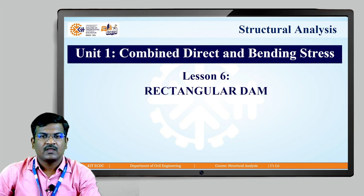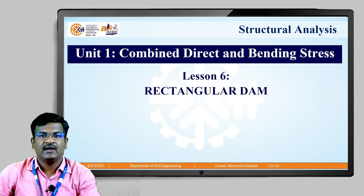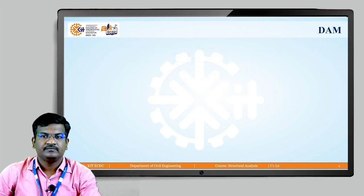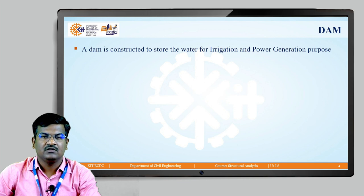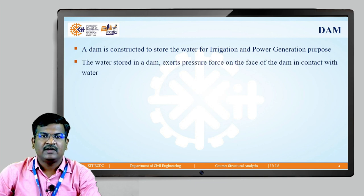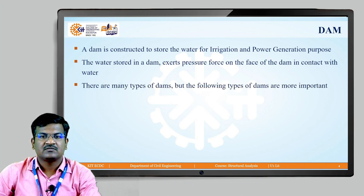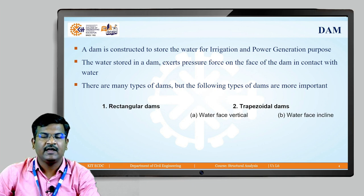Now we will discuss the dam, specifically the rectangular dam — how to find out the combined direct and bending stress on a rectangular dam. The dam is constructed to store water for irrigation and power generation purposes. The stored water exerts pressure force on the face of the dam in contact with the water. There are many types of dams, but two are most important: the rectangular dam and the trapezoidal dam.